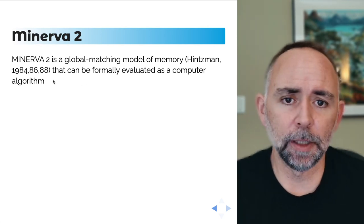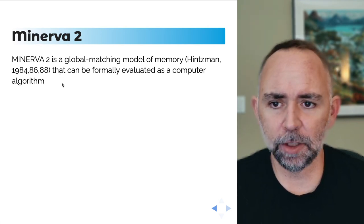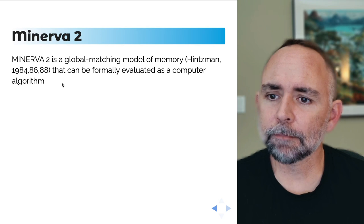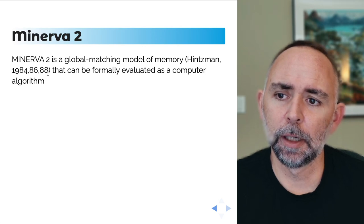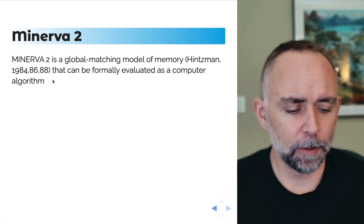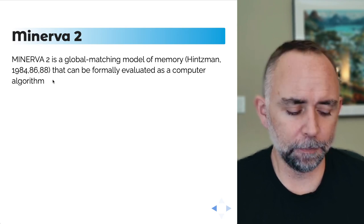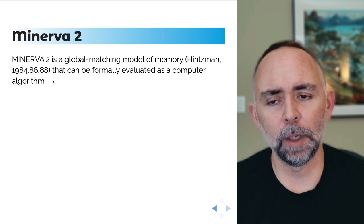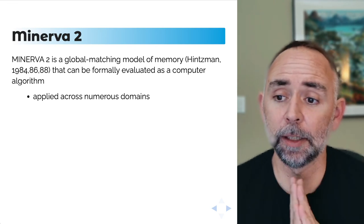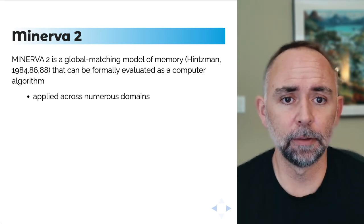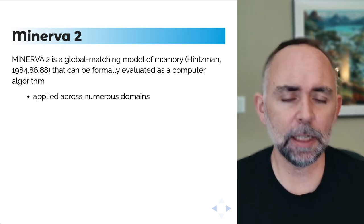We're talking about something called Minerva 2, a global matching model of memory put forward by Doug Hintzman in a series of papers. It allows us to express the ideas of instance theory as a computer algorithm, which makes it easier to evaluate what these ideas can actually do. It's also being applied across a whole bunch of different domains in cognition, and it's quite impressive how many different phenomena it can potentially explain.